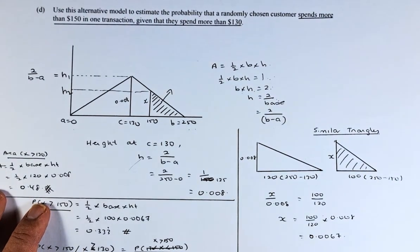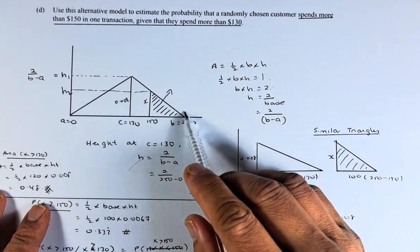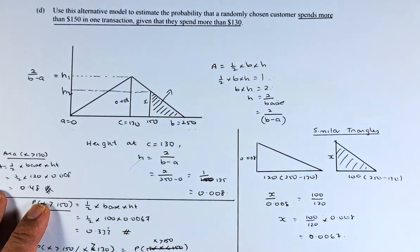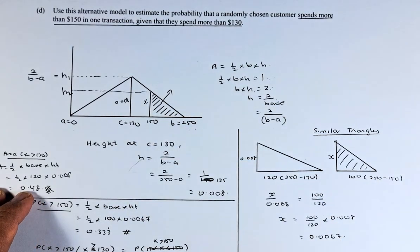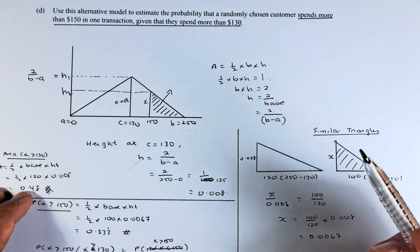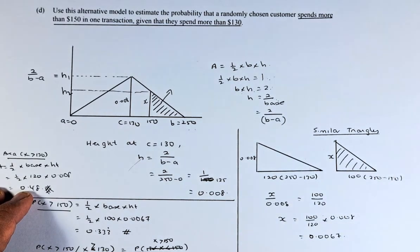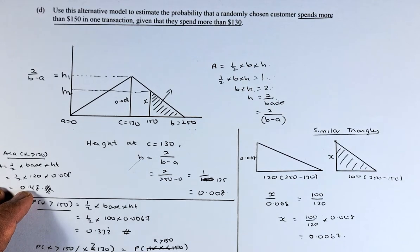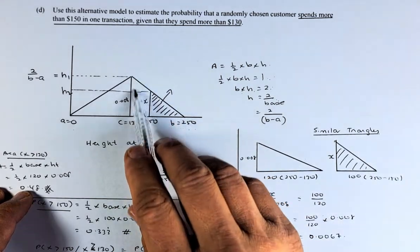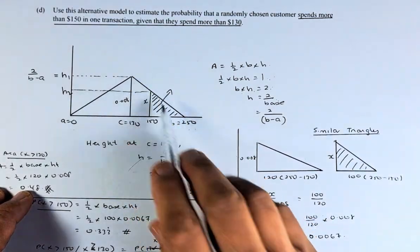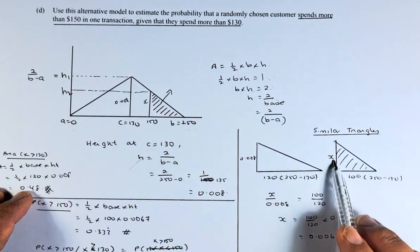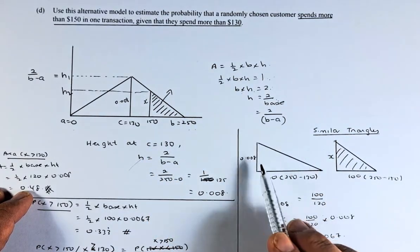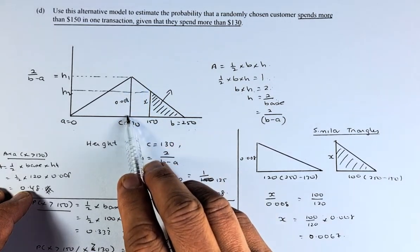Before we even go further, we need to find the area of this triangle here. To find the area of the shaded region, we're going to use similar triangles. We have the big triangle here and the shaded triangle is represented here. This x, this 0.008 we found earlier, 0.008. This length from 130 to 250 is going to be 120.